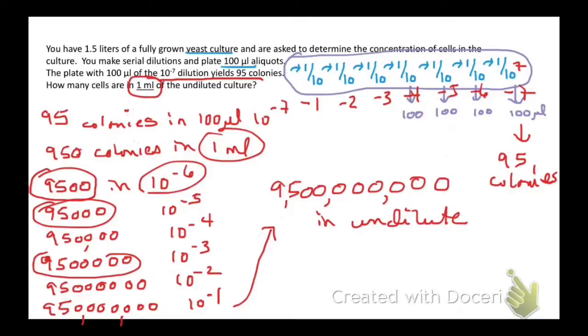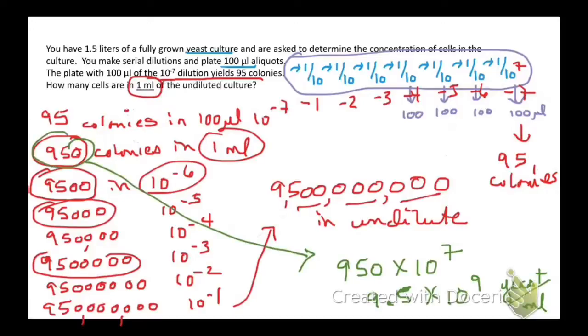This means you had 9.5 billion cells in the undiluted culture. But a faster way to get to that would be to go back to your original estimate, 950 colonies. You could use that value to say we've got 950 times 10 to the 7, because that's your dilution factor, and that translates into the same number, which is 9.5 times 10 to the 9 yeast cells per mil.